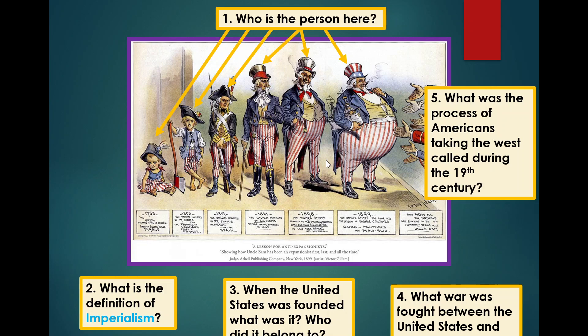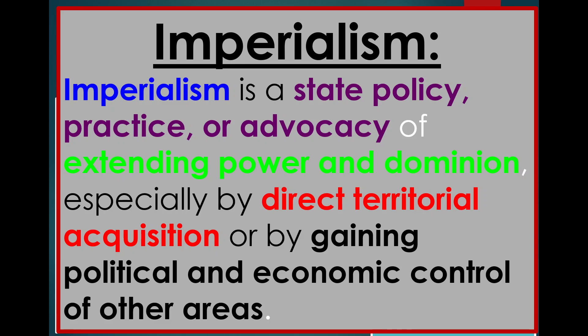The United States continues to get larger and larger and larger. This process of taking land is called imperialism. Imperialism is a state policy, practice, or advocacy of extending power and dominion, especially by direct territorial acquisition — basically taking land or things or places or people and gaining political and economic control of other areas.